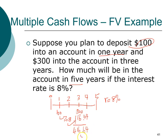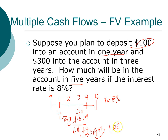You'll continue to earn 8% interest. So at the end of year four, the $416.64 will increase by 8% and grow to $449.97. Then it will earn another 8% to reach year five. Altogether at the end of year five, you will have a total of $485.97.